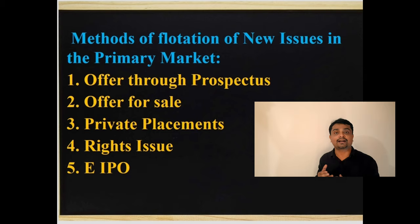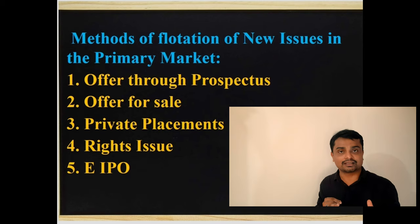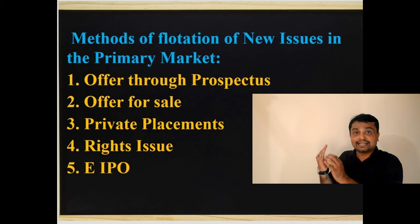The second method is offer for sale. It is an indirect IPO. Under this method, the issuing company sells its entire securities to an intermediary, and the intermediary then sells them to the public at a higher price.